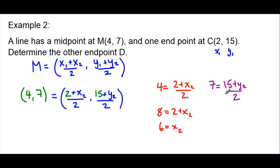Let's do the same operations for the y's. We need to multiply both sides by 2 in order to get rid of this divide by 2. So 7 multiplied by 2 is 14, that will equal 15 plus y2. Now we'll move the 15 over to the left, it becomes negative. So 14 subtract 15 is negative 1, and that's our y value for our second endpoint.